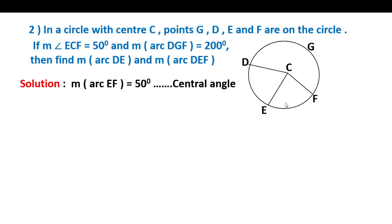Solution: Measure of arc EF equals 50 degrees, which is the central angle ECF. Now, measure of arc DE plus measure of arc EF plus measure of arc DGF equals 360 degrees, because together they form the complete circle.